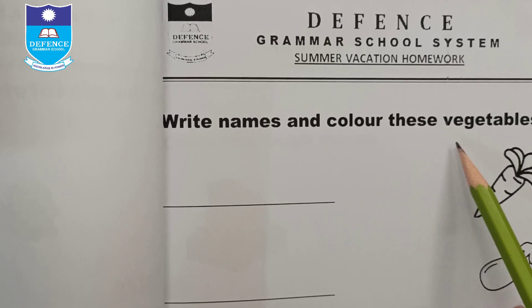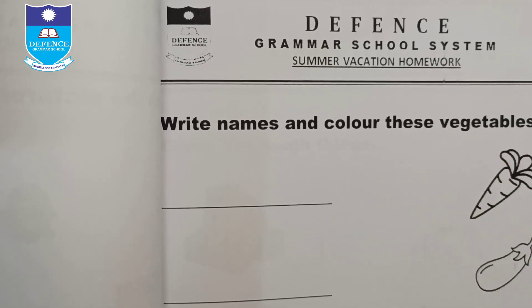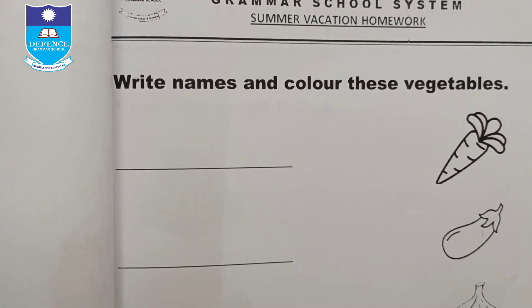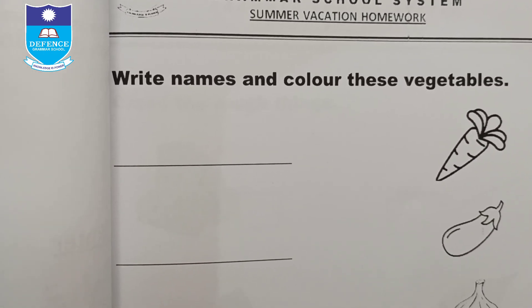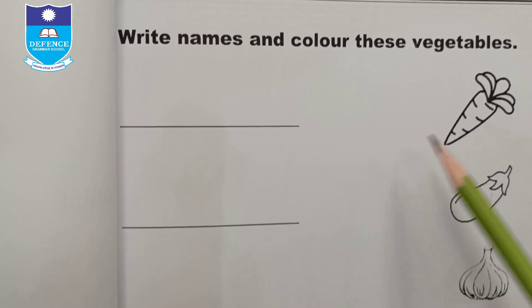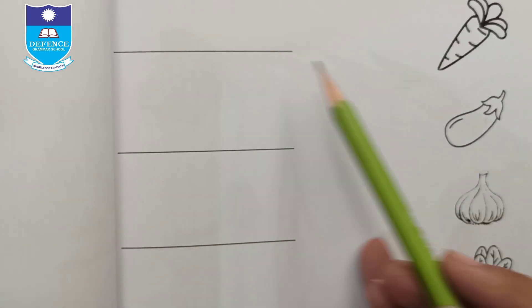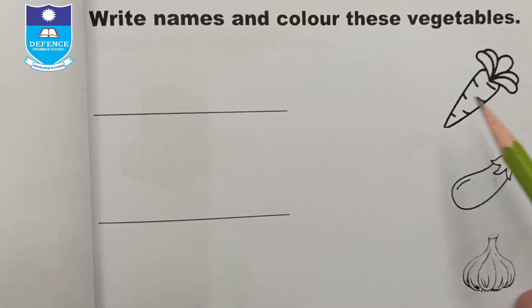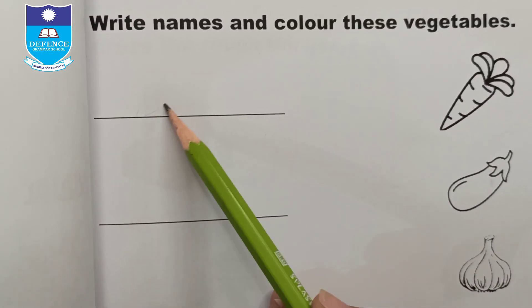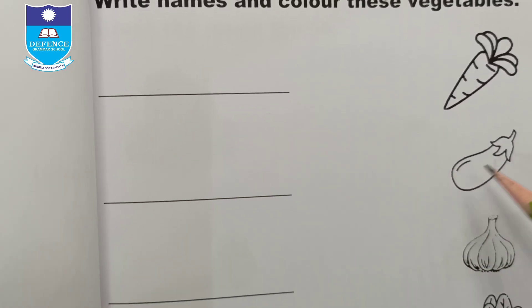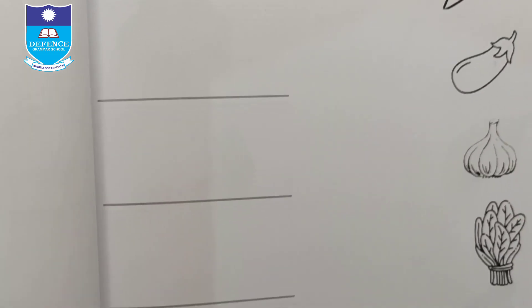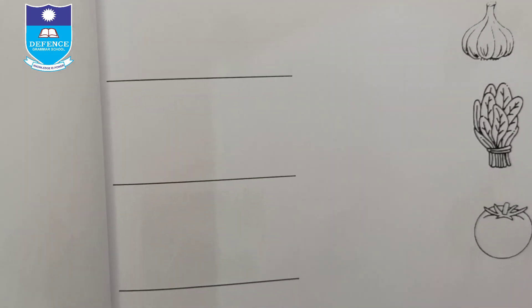Write the names and colors of the vegetables. Some vegetables are shown on this page. The first one is carrot — write its name and color. Similarly, write the names and colors of all the other vegetables.